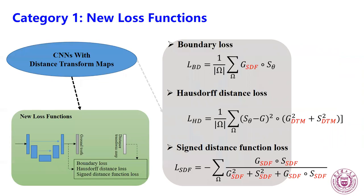These are the mathematical formulations of the three loss functions. Boundary loss is based on the Hadamard product between the SDF of ground truth and softmax probability. Distance transform loss uses DTM of both ground truth and segmentation mask, while SDF loss relies on the SDF of ground truth and segmentation mask.